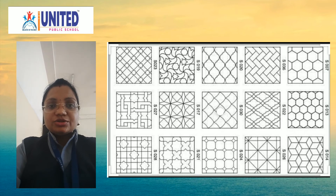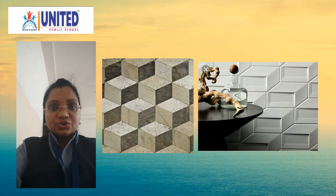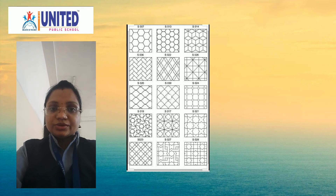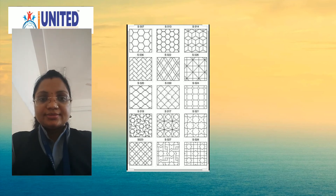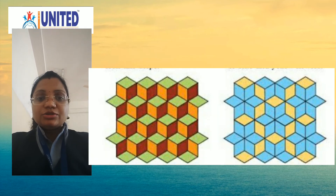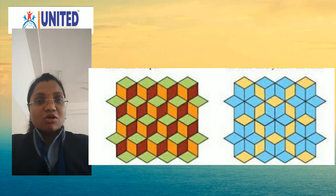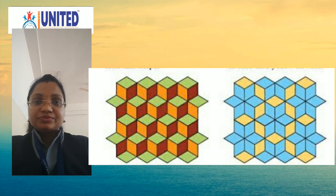We can also see different types of 3D tiles in which 3D shapes are used. You can identify which type of shape is used for making those tiles or floors. You can also make different tiling patterns by using 2 colors, 3 colors, or many more colors. The pattern shape is the same but the combination of colors is different, so we get different tiling patterns.